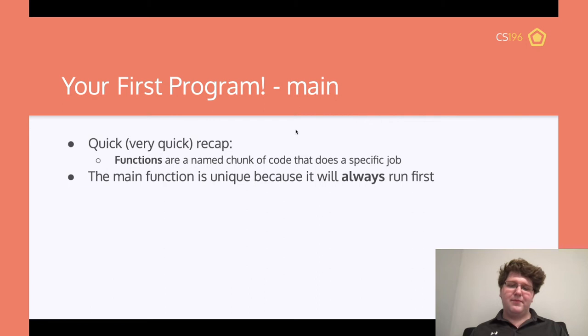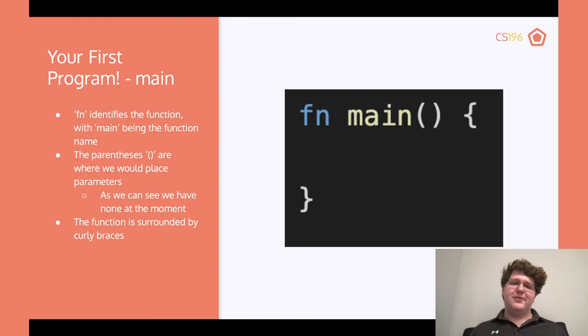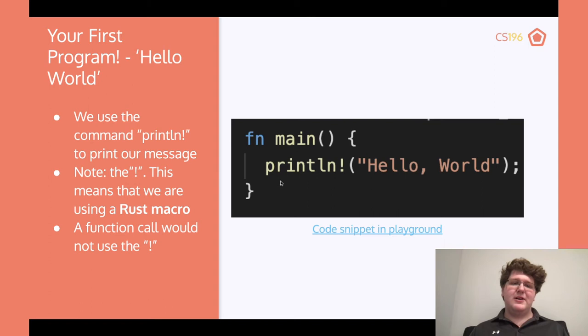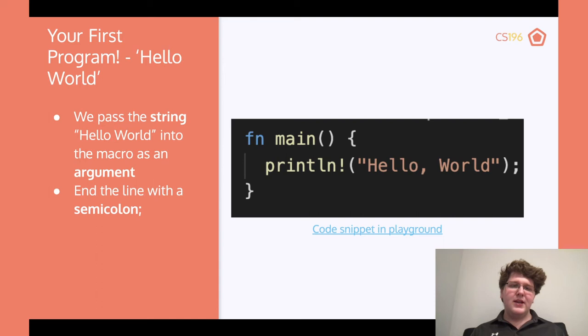fn defines the function, main is the function name, the parentheses are where we place parameters, and the function body is surrounded by curly braces with println! inside. The exclamation mark tells the compiler this is a Rust macro — a function call would not use it. Because Rust has these things called macros, you call them by putting an exclamation mark, then pass hello world as an argument and end with a semicolon.